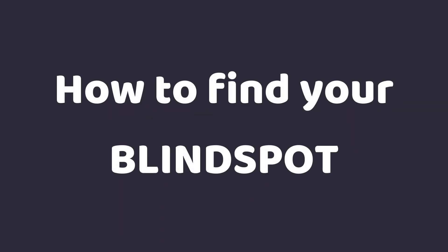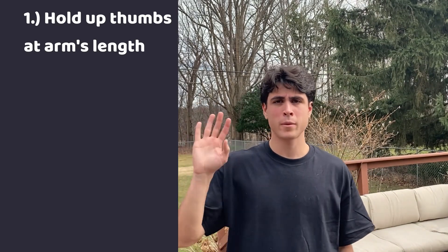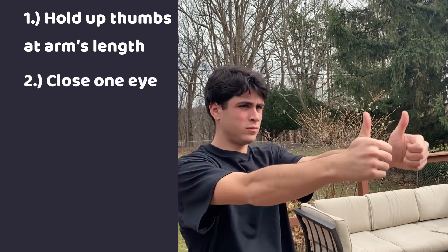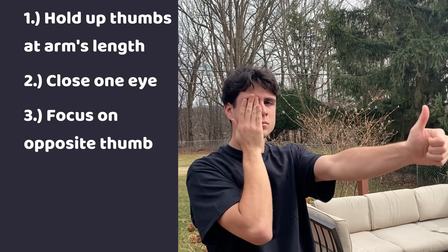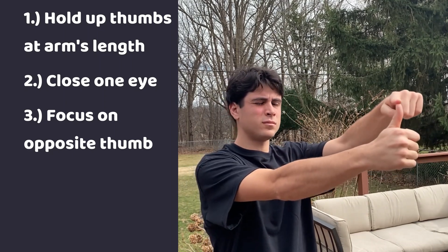Here's how to find your blind spot yourself. Step 1, hold both thumbs up at arm's length side by side in front of you. Step 2, close one eye. Step 3, focus on the opposite side thumb while being aware of the other still in your peripheral vision.